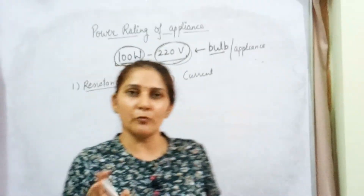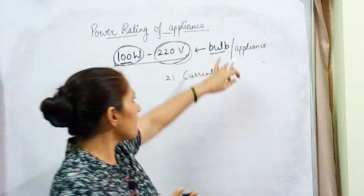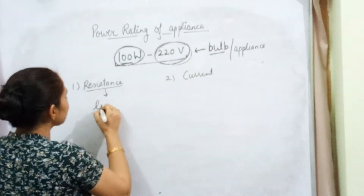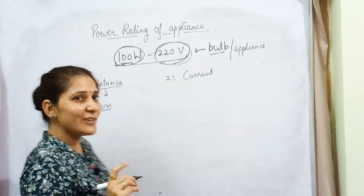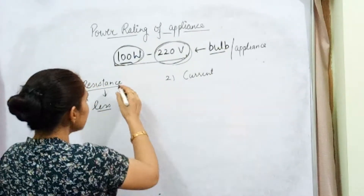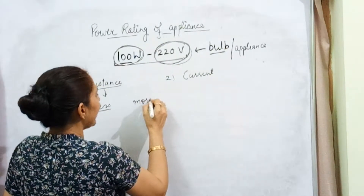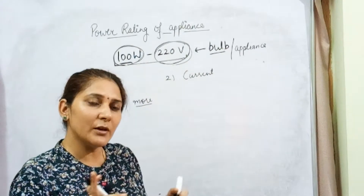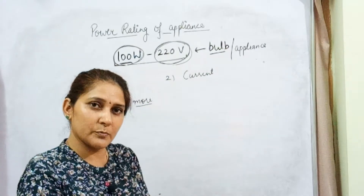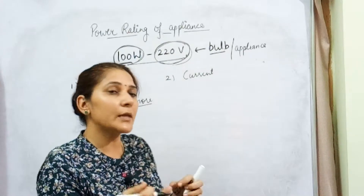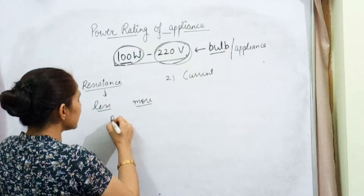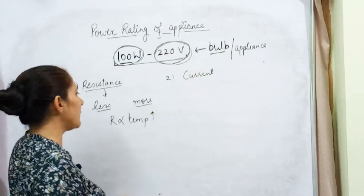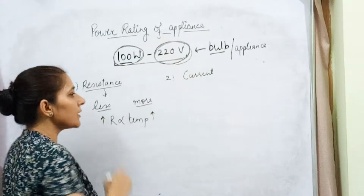Now when we talk about resistance: if the appliance is not working — for example, if we are talking about a bulb and the bulb is not glowing — the resistance of the filament of the bulb is less. But when the bulb starts glowing, the resistance of the filament will be more. Why? Because when electricity is supplied to the bulb, the temperature of the filament increases, and resistance is directly proportional to temperature.